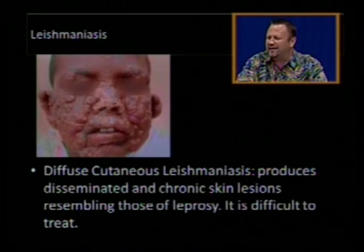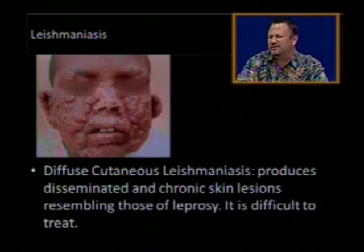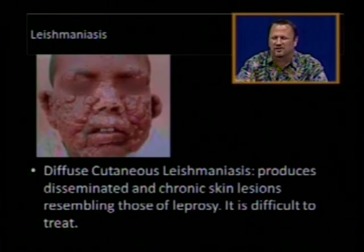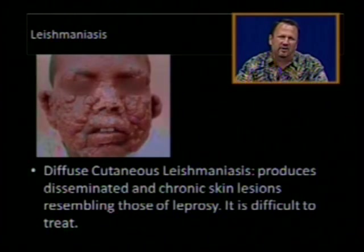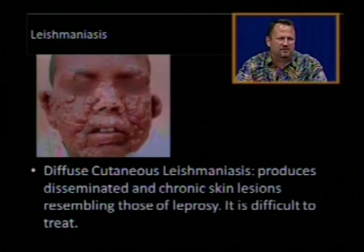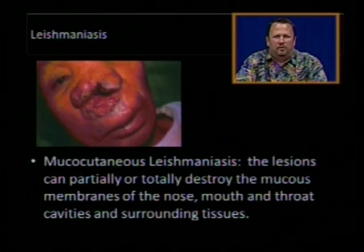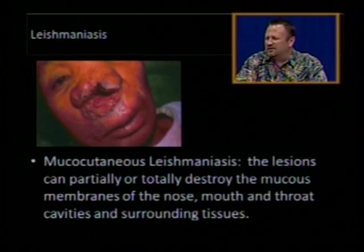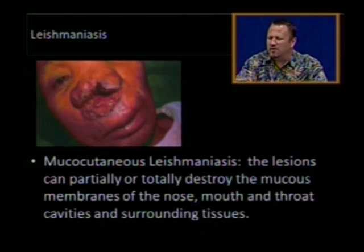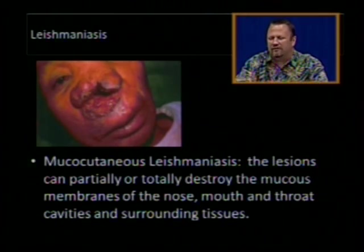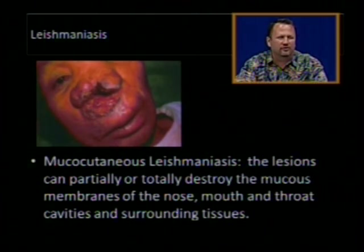Diffuse cutaneous leishmaniasis produces disseminated and chronic skin lesions that are very similar to those of leprosy, and is a very difficult form to treat. Mucocutaneous leishmaniasis results in lesions that partially or totally destroy the mucous membranes of the nose, mouth, throat, and cavities of surrounding tissues.